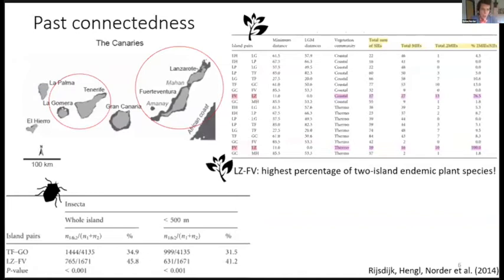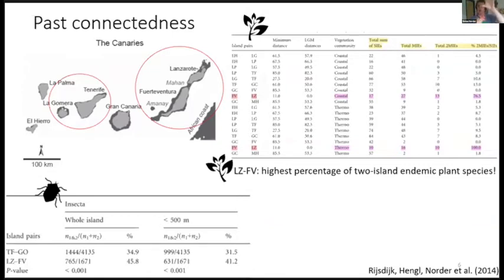They compared two island pairs: Fuerteventura and Lanzarote, which were connected during the last glacial maximum, versus Tenerife and Gomera, which were never connected. They found that Fuerteventura and Lanzarote share a significantly larger number of insect species than the never-connected island pair. Looking at plant species and comparing all possible island pairs, the proportion of multiple island endemics shared by those two connected islands was much larger than for all other island pairs.